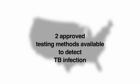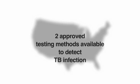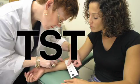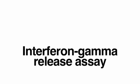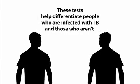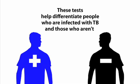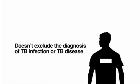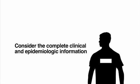There are two approved testing methods available to detect TB infection in the U.S. The first is the Mantoux tuberculin skin test, also called the TST. The second is the interferon gamma release assay, also called IGRA. These tests help differentiate people who are infected with TB and those who aren't. However, a negative reaction to either of these tests doesn't exclude the diagnosis of TB infection or TB disease. Consider the complete clinical and epidemiologic information, particularly for high-risk populations such as people living with HIV.